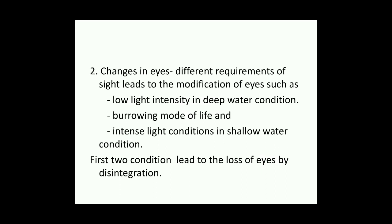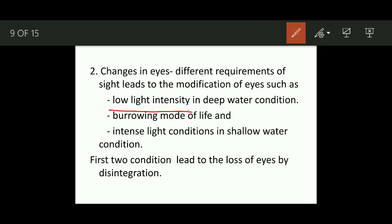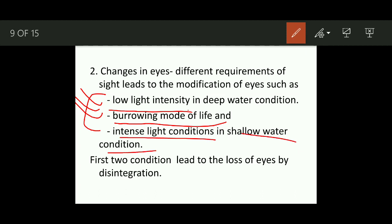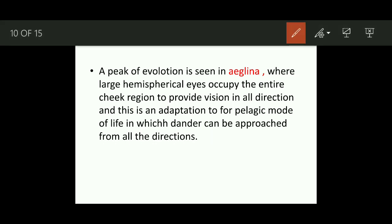Changes in the eyes: different environments have different visual requirements. Trilobites that lived in low light intensity in deep water conditions, or adopted a burrowing mode of life, show disintegration or loss of eyes. In shallow water conditions with intense light, large eyes developed so the animal could see in multiple directions to detect approaching danger, as predators and scavengers were more numerous in shallow water.